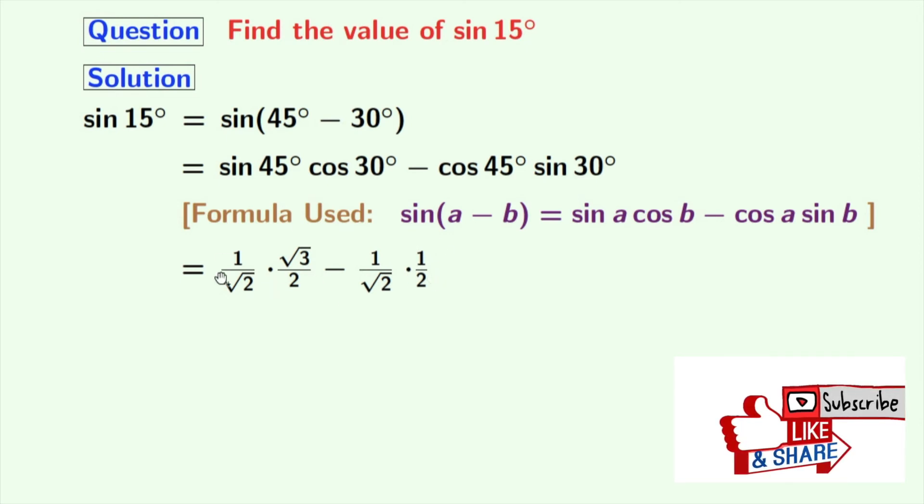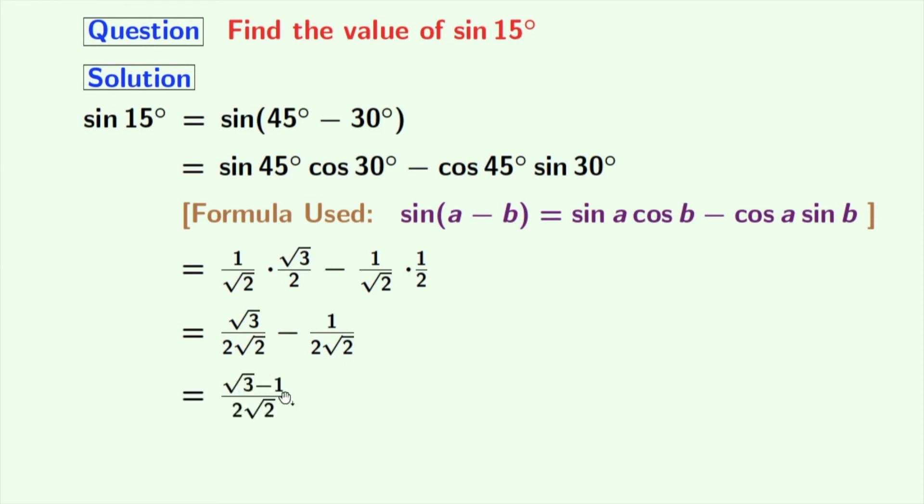Now simplifying this we get root 3 by 2 root 2 minus 1 by 2 root 2, and this is equal to root 3 minus 1 by 2 root 2, which is our final answer.